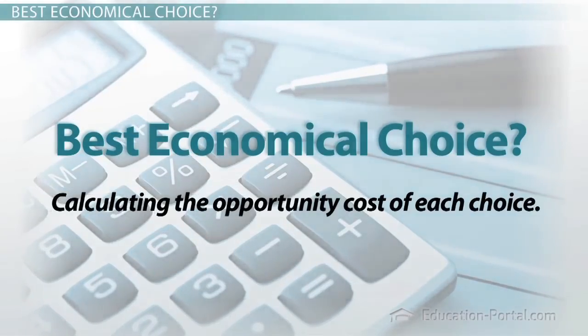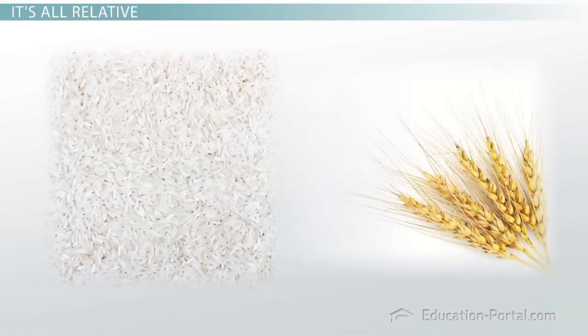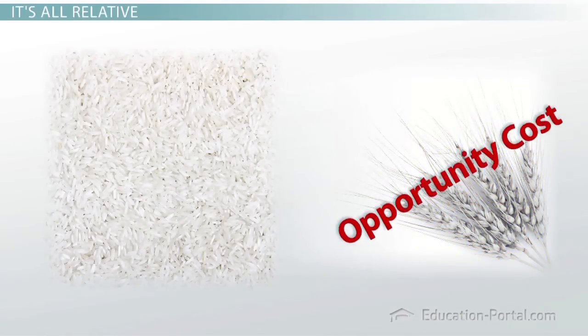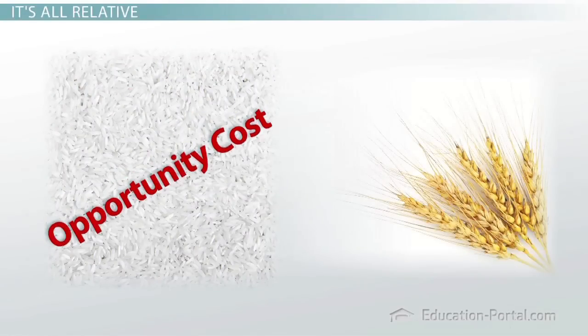Opportunity cost is a relative concept, which means that you're finding out how much of one thing you can produce in comparison to another thing. For example, if the two goods you're interested in are rice and wheat, then the opportunity cost of producing rice will always be in terms of wheat, and the opportunity cost of producing wheat will always be in terms of rice.